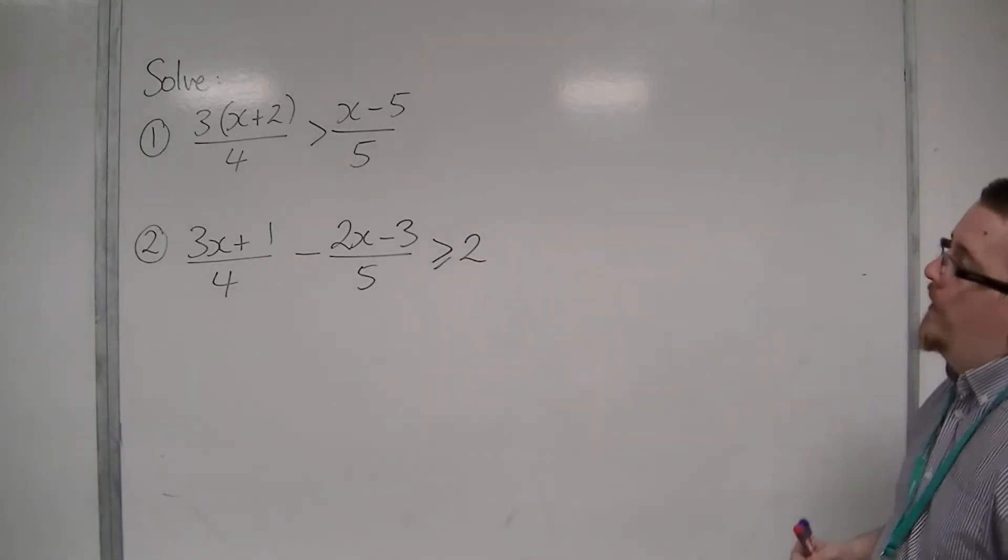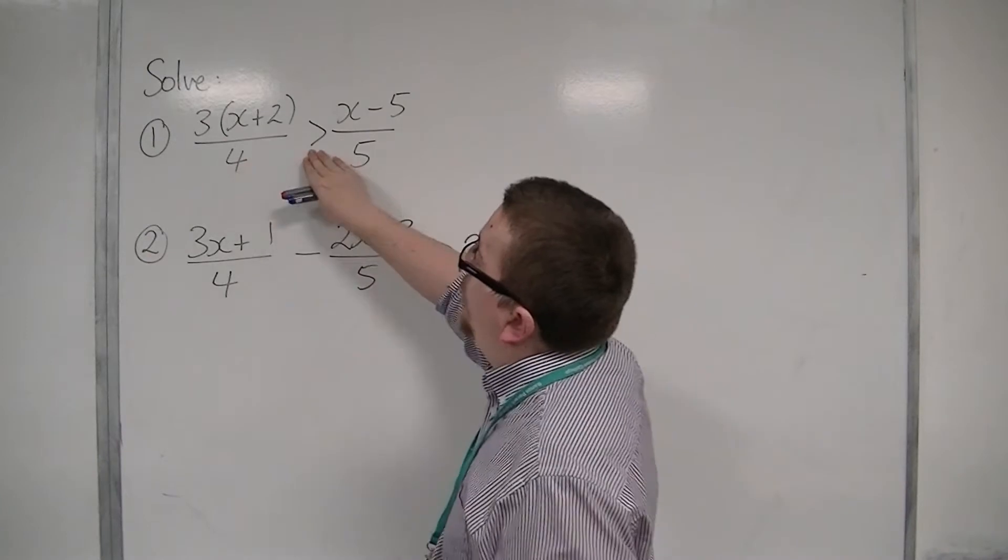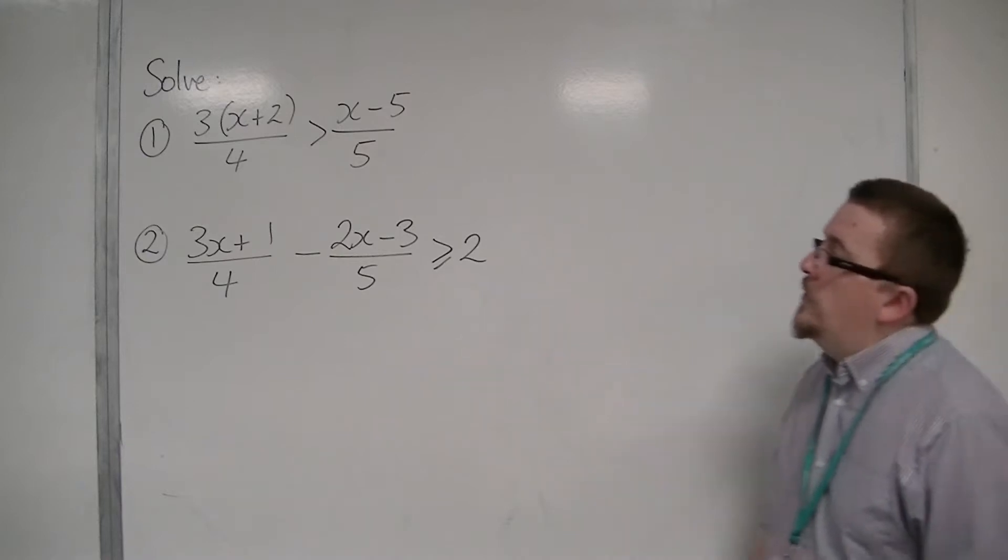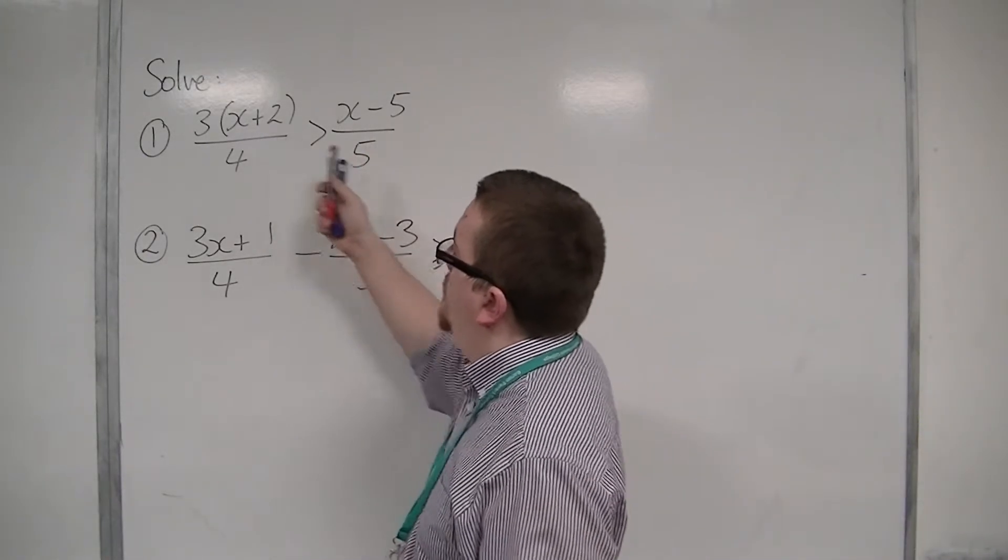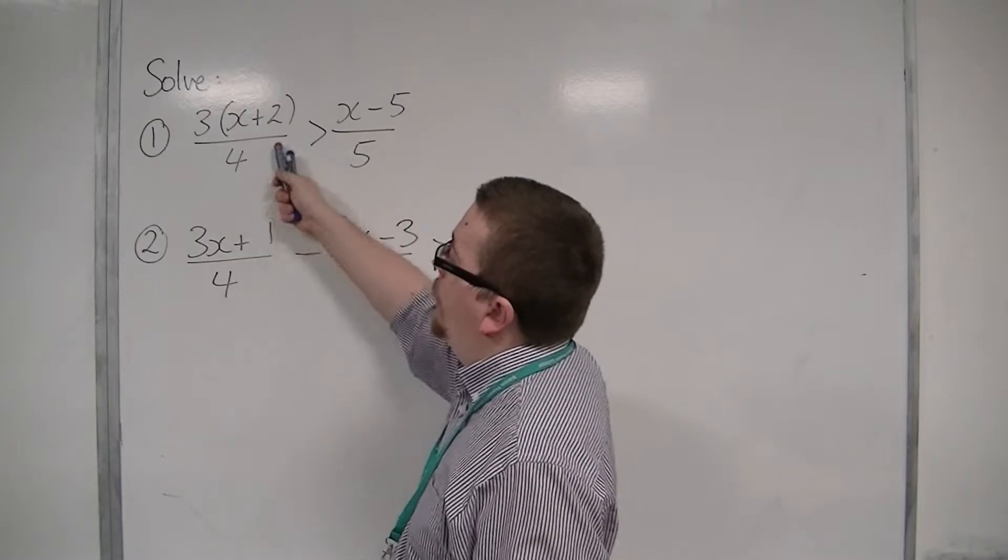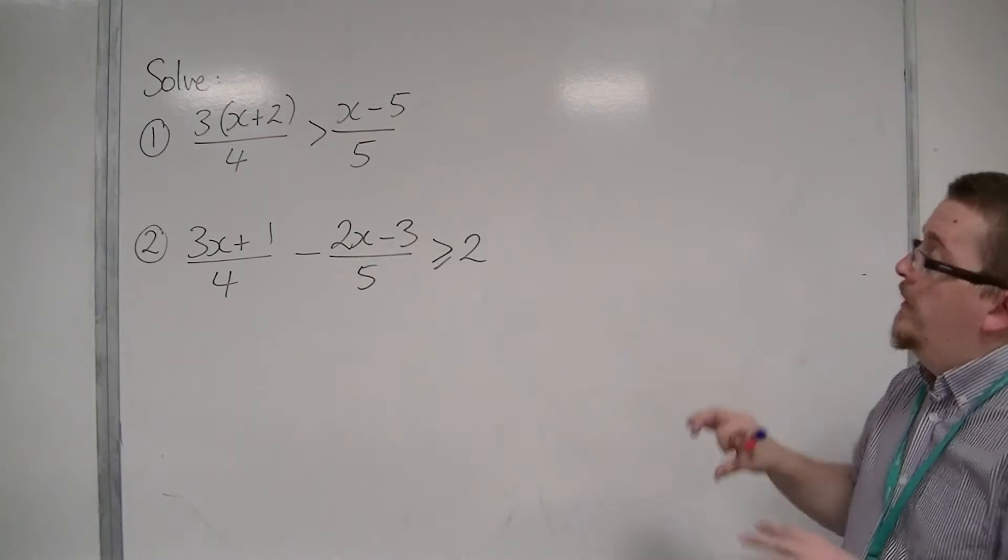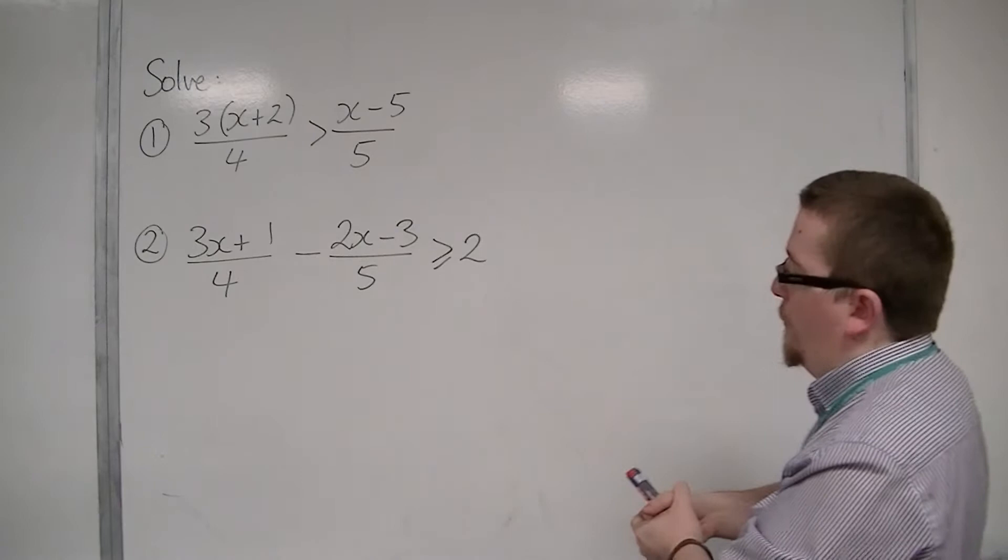So let's look at number one. We have 3(x+2)/4 is greater than (x-5)/5. So what I'm going to do is I'm going to multiply both sides by 5, and I'm going to multiply both sides by 4. That will get rid of the 4 and the 5 at the bottom in the denominators effectively. So the fractions will disappear.